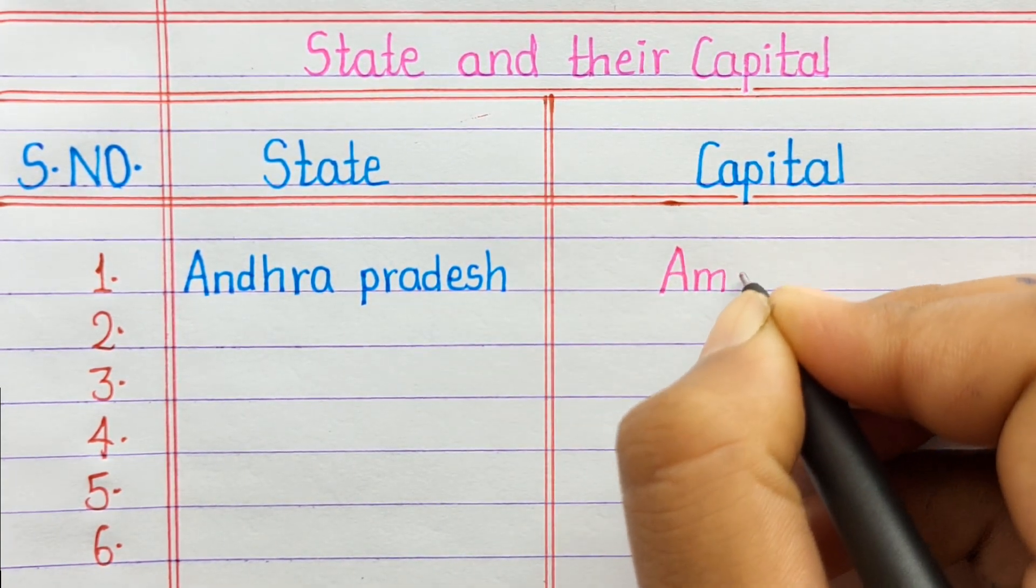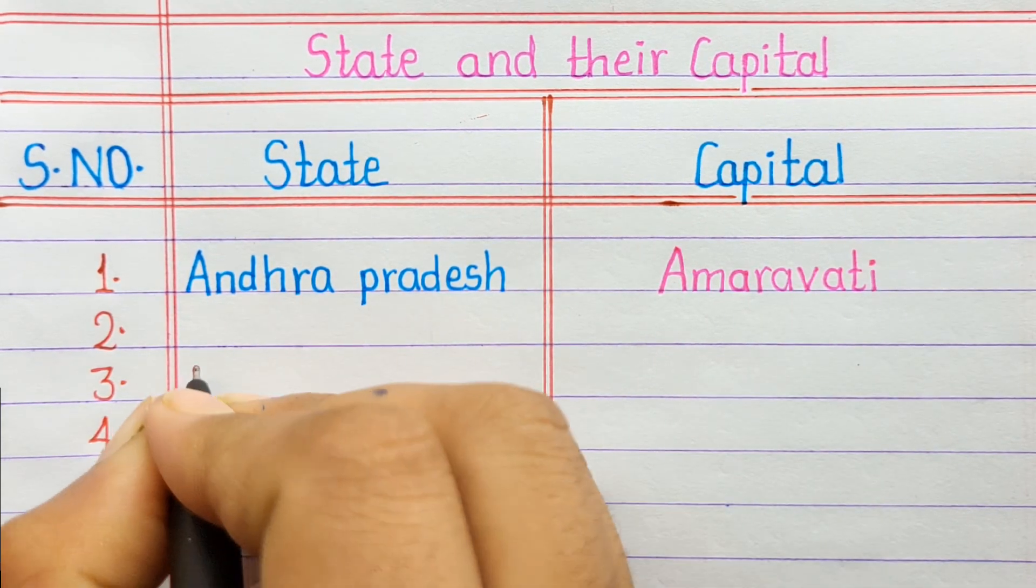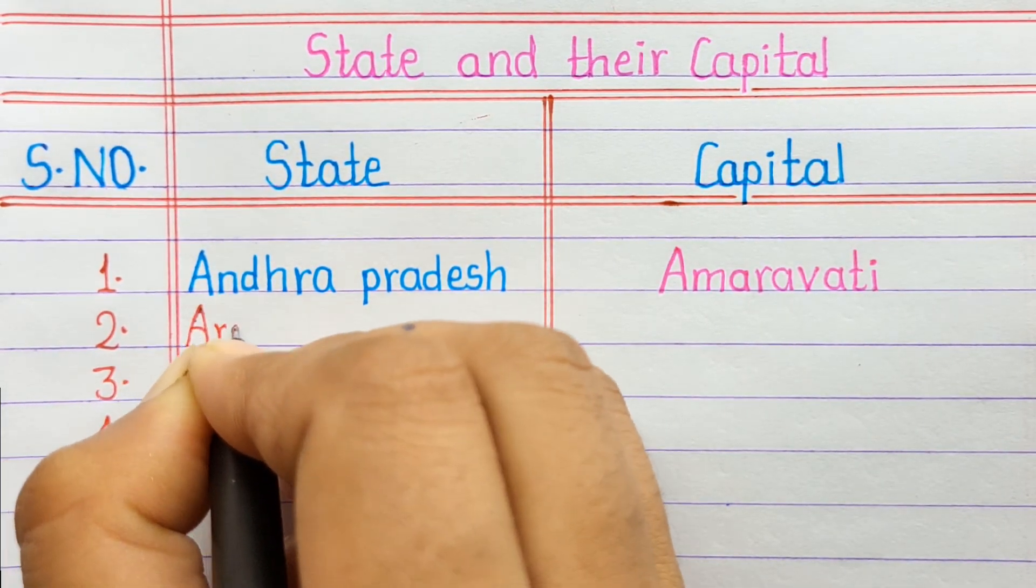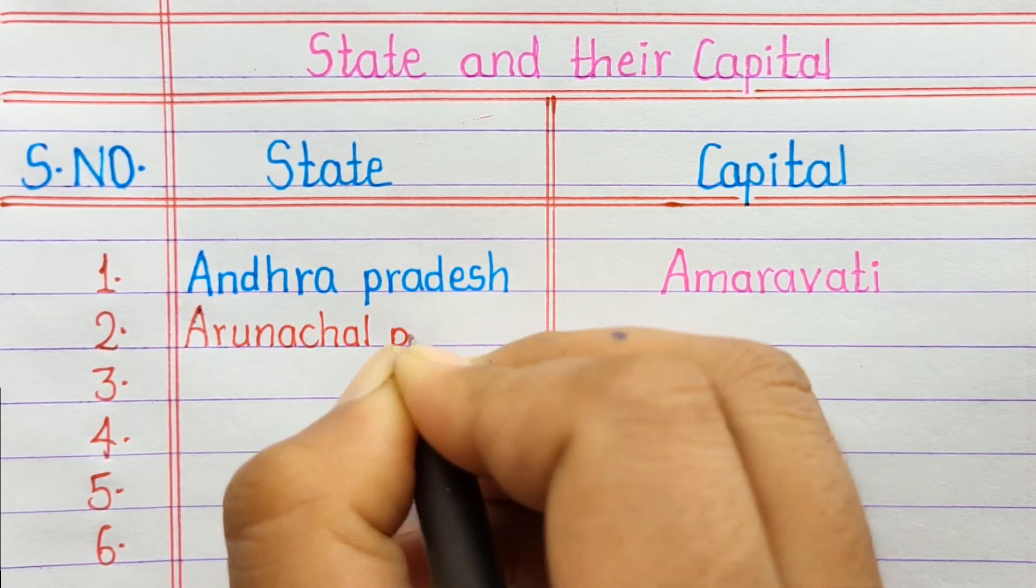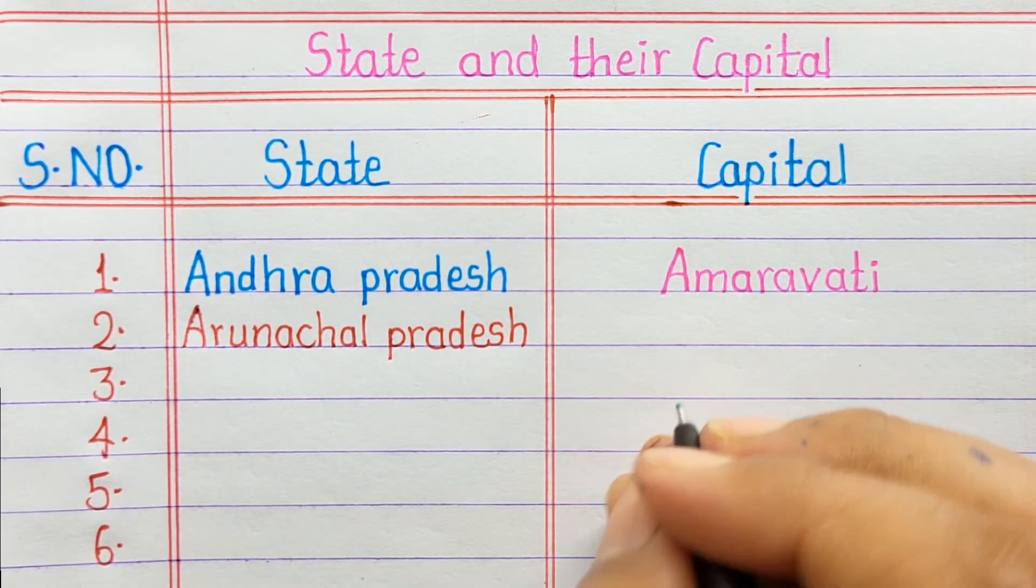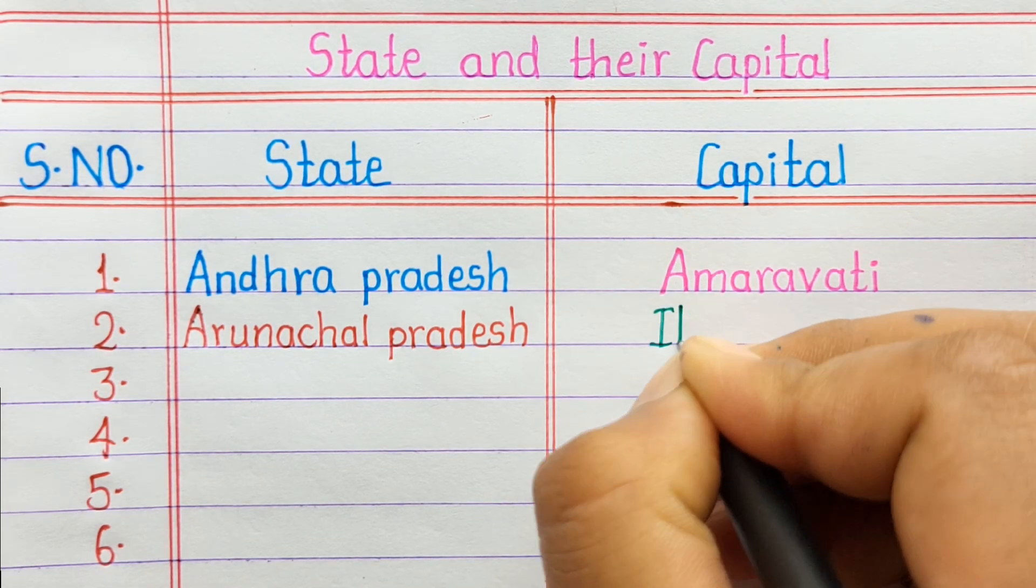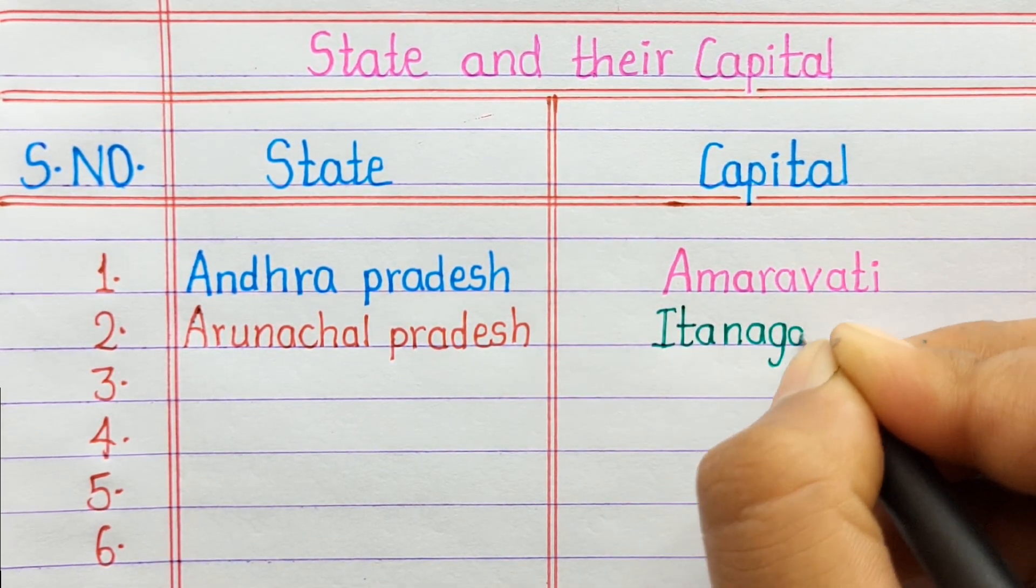Number 1. Andhra Pradesh, Amaravati. Number 2. Arunachal Pradesh, Itanagar.